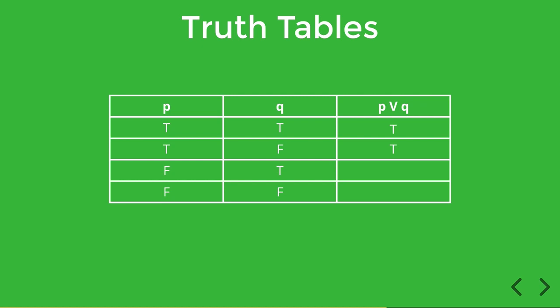For example, squares are rectangles or 8 is prime. That's true even though 8 is not prime. So as long as either P or Q is individually true, then the disjunction will be true as well.